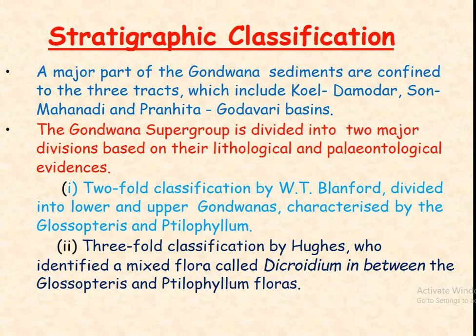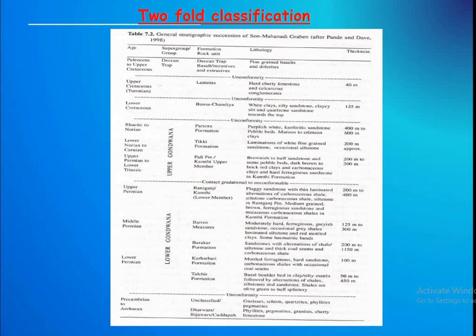The Gondwana Supergroup is divided into two major divisions based on lithological and paleontological evidence. The first is the two-fold classification by W.T. Blanford, divided into Lower and Upper Gondwana. The Lower Gondwana includes the Talchir Formation, Karharbari, and Barakar. The Upper Gondwana in the Pranhita–Godavari Basin includes the Pali Formation, Tiki Formation, and Parsora Formation.